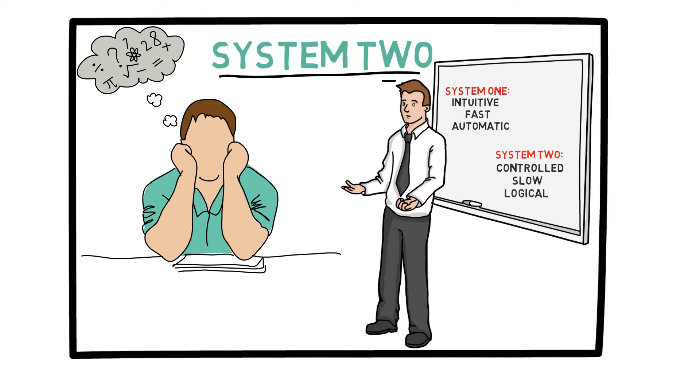While System 1 is fast and based on intuition, System 2 is slower and more calculated. Now, each of these two systems has its own advantages and disadvantages.